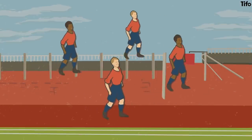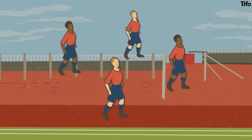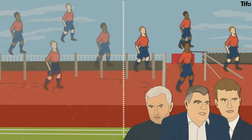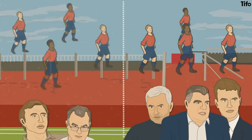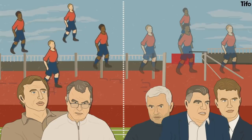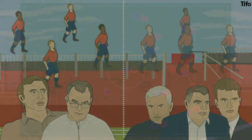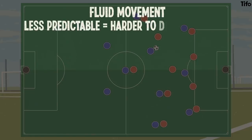Fluidity in football is another way of describing the freedom of movement that players have within a tactical system. Some managers prefer a more rigid, structured set-up that requires positional discipline. Others prefer players to rotate positions in order to create fluid, flowing attacks. This fluid movement helps to make a team less predictable, and therefore, in theory, harder to defend against.